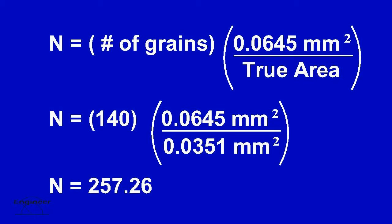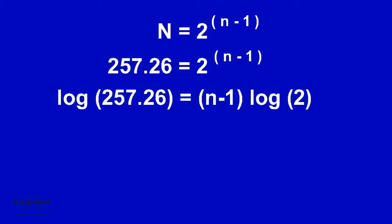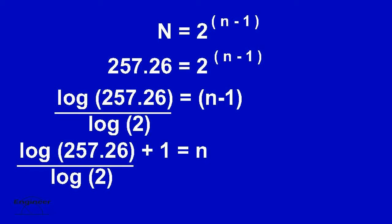Now that we have a value for big N, we can plug it into the other equation to solve for little n. The grain size number is the little n. In order to bring the unknown little n down from the exponent, we must log both sides. This is our grain size number. We now have completed part 2.